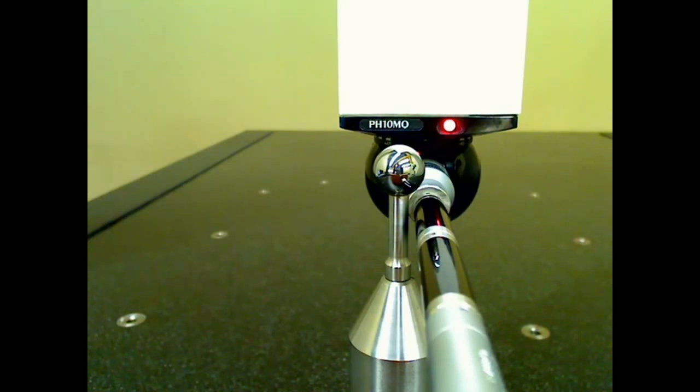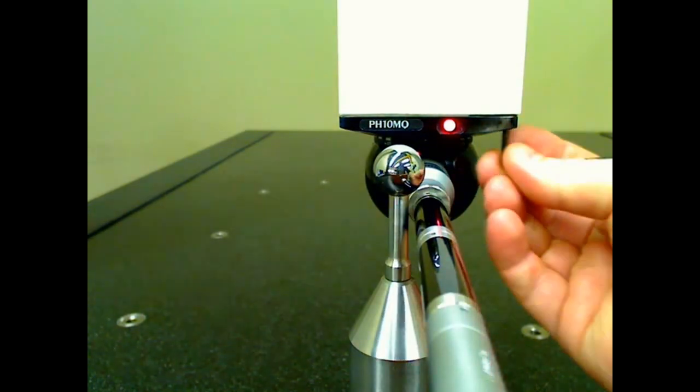If the gap does change, it tells me that the head is unsquared. So what I need to do next, if it's not square, is just loosen the hex nuts underneath the PH10 head.